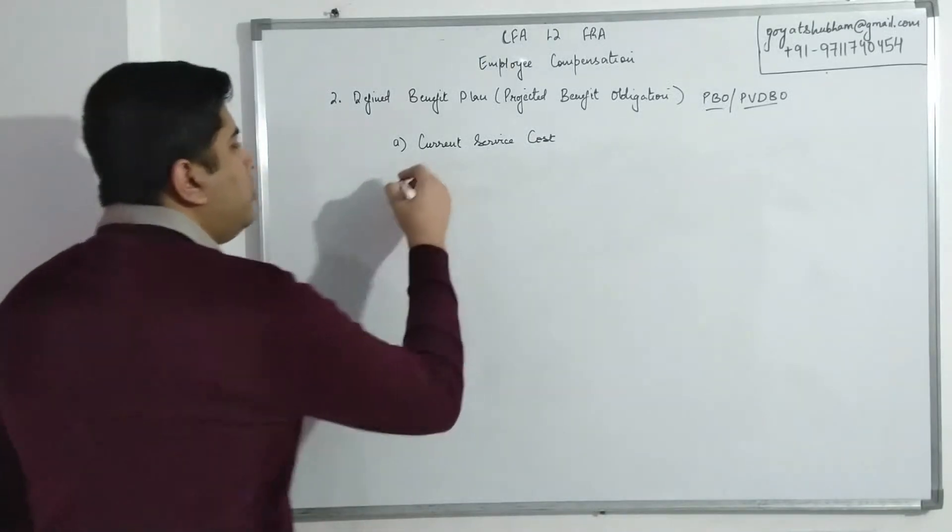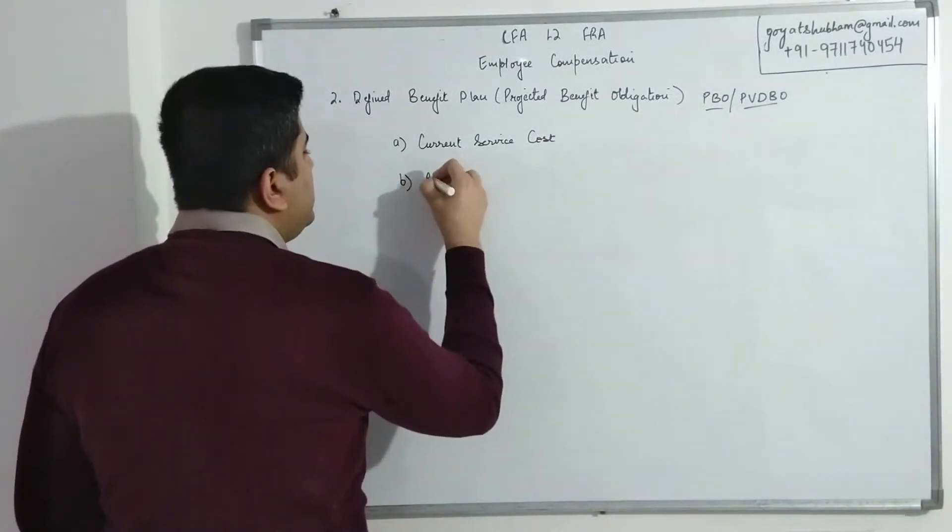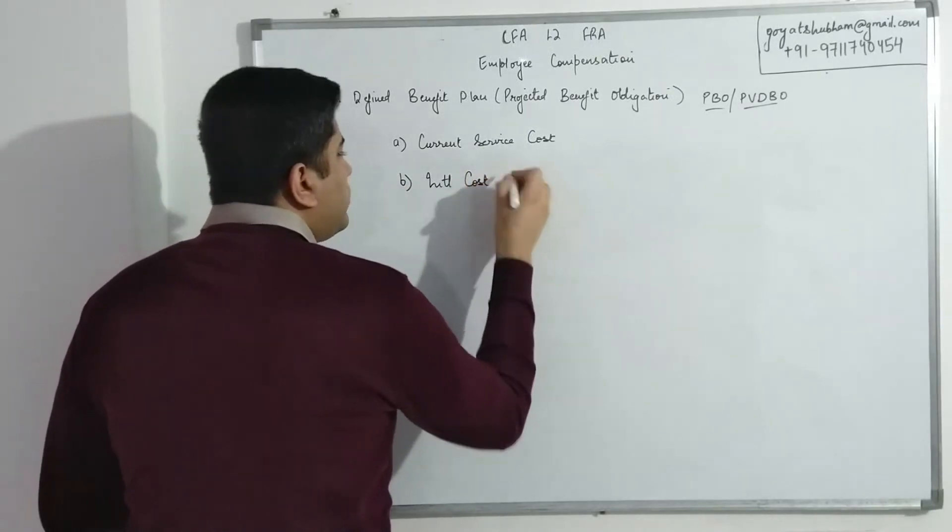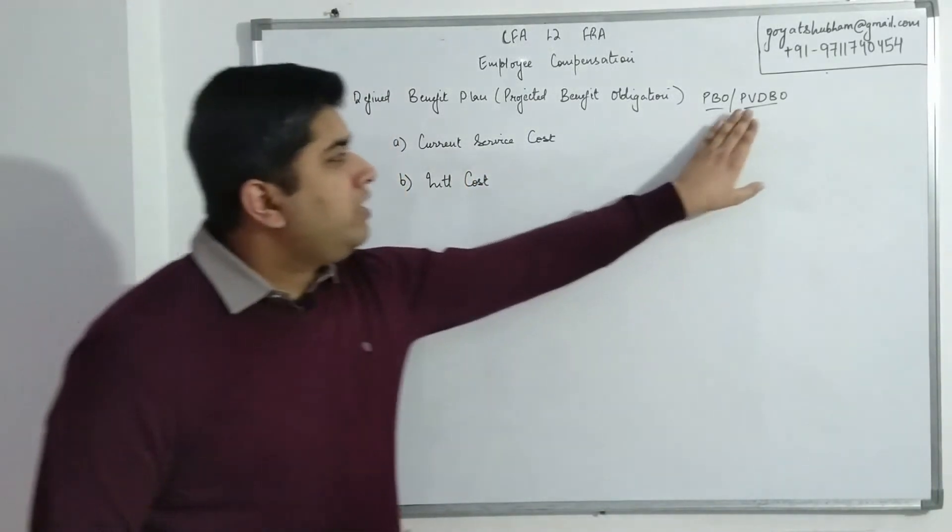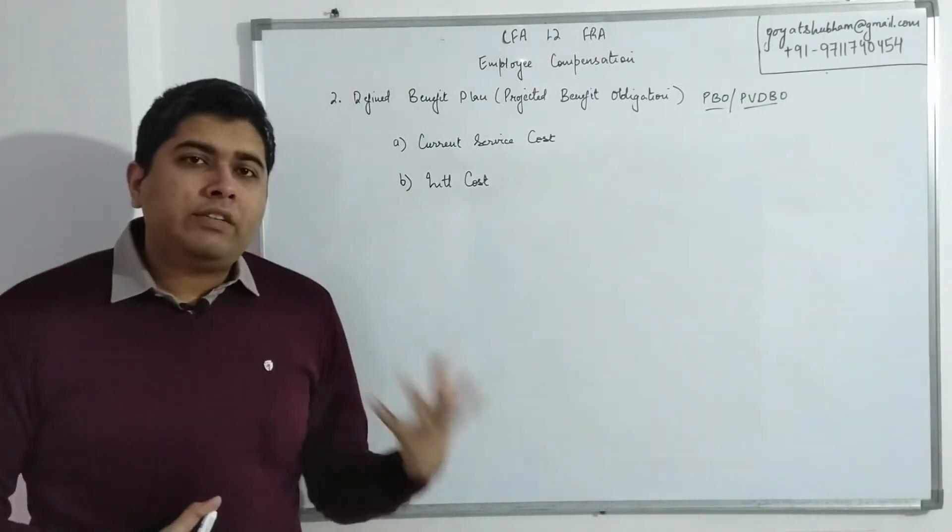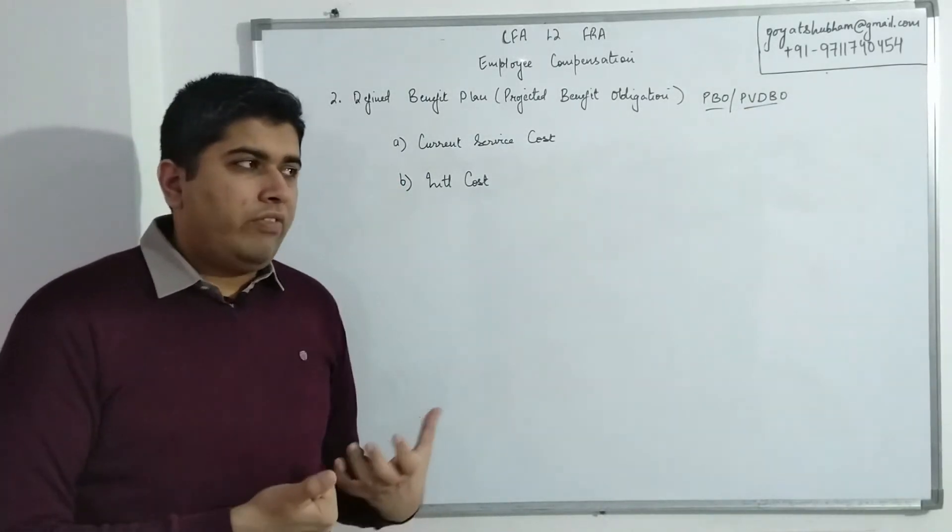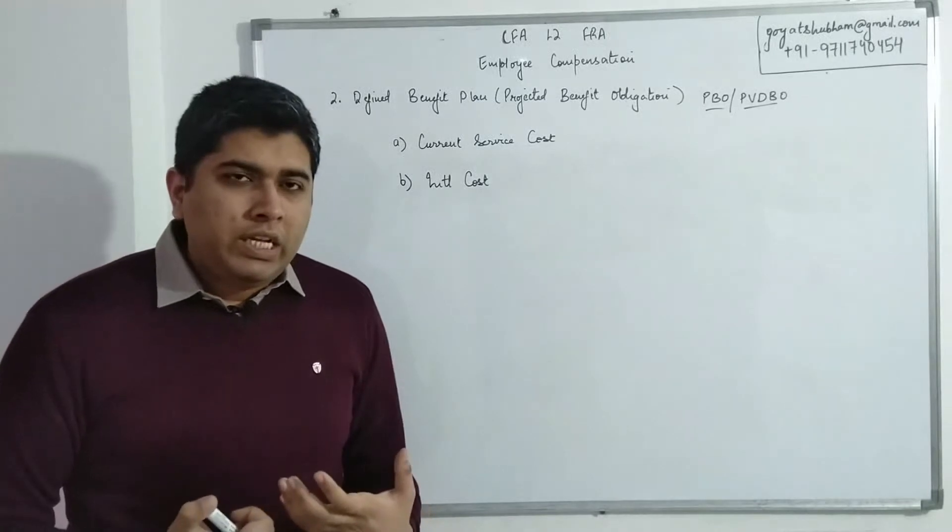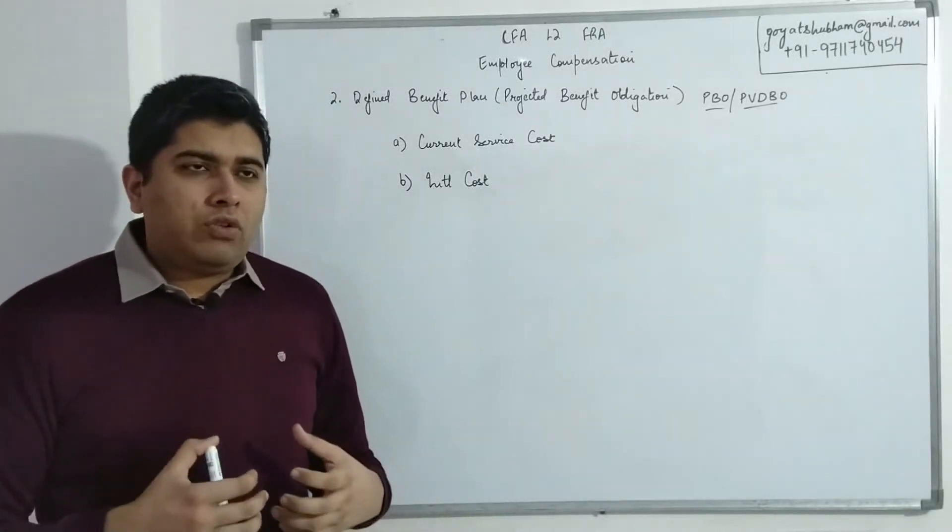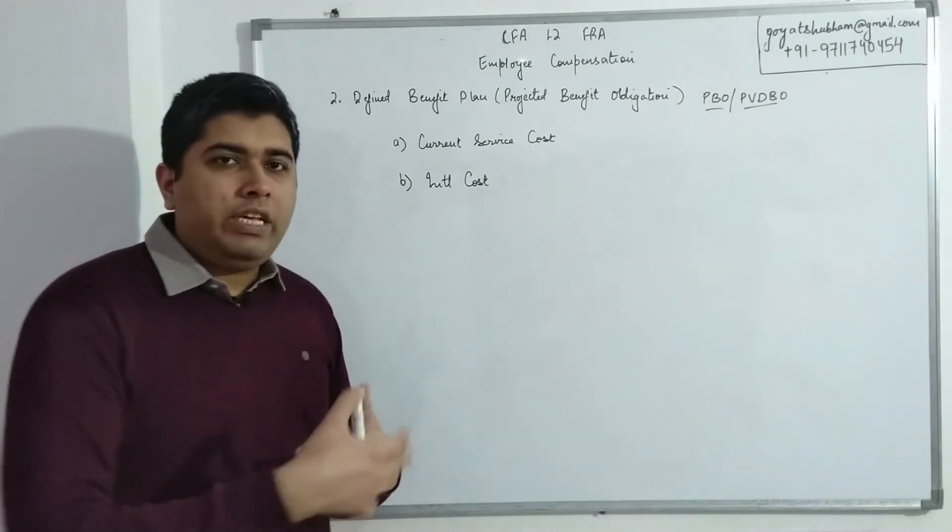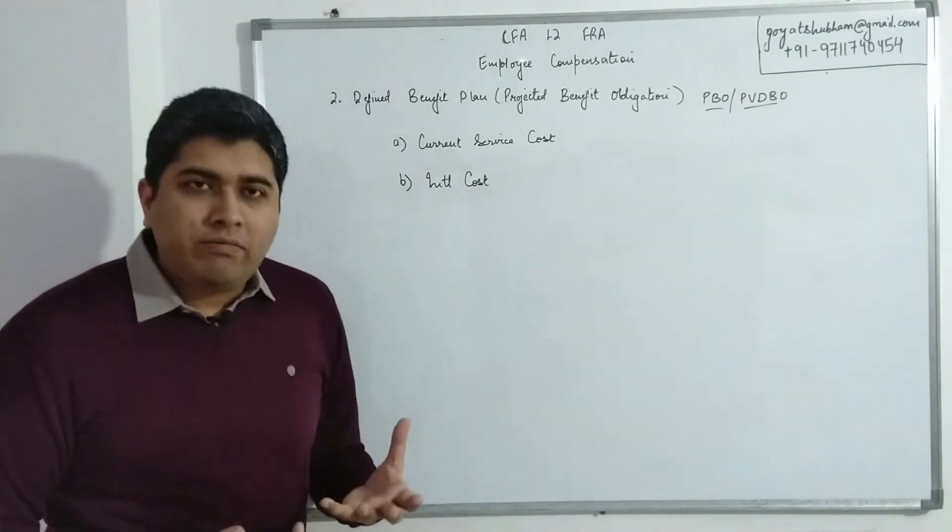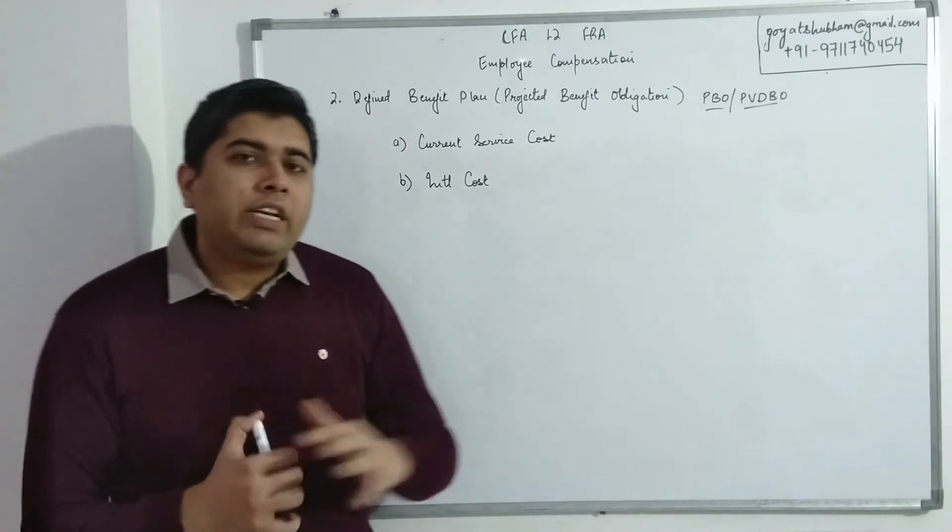So if the employee is working with us for the next 20 years, I want the obligation part not to show up all of a sudden at the start. Rather, I want the obligation part also to be bifurcated into 20 years. So the proportionate part of my PBO that I am showing in any financial year, that is known as Current Service Cost. Now I know outright understanding it with words is a slightly tricky thing. Don't worry, after we have a basic understanding we'll move on to an example and I'm sure that would clarify things further.